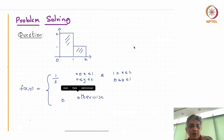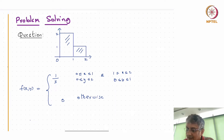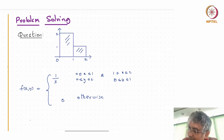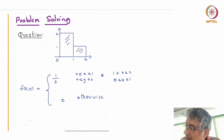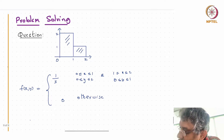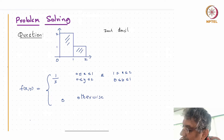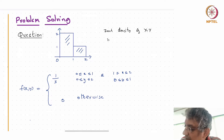We'll do some problems on conditional densities arising from a picture. I'm given random variables X and Y whose joint density is constant on this picture — the joint density of X and Y is constant on this region.